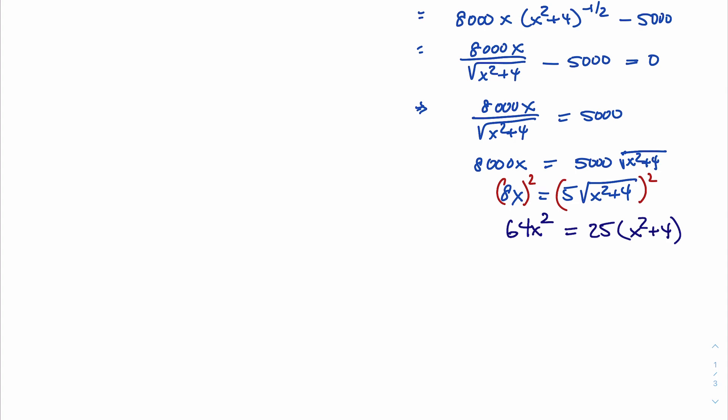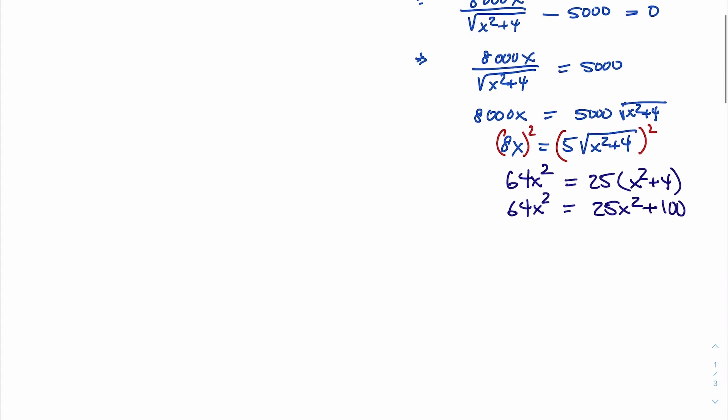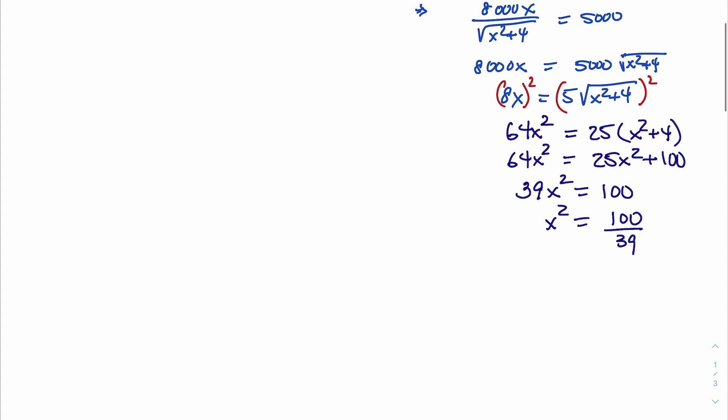And then subtract 25x squared from both sides. That means we have 39x squared equals 100, which means x squared is equal to 100 over 39. Kind of a weird number there. So that means x is equal to, now normally it's plus and minus, but we know in this problem we're only dealing with positives. x is a distance. So it's the square root of 100 over 39, which oddly enough is just very close to 1.6. So that number is on our interval, so it does need to be checked.